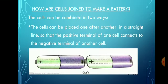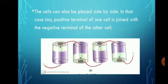There are two ways to join cells to make a battery. First, cells can be placed one after another in a straight line so that the positive terminal of one cell connects to the negative terminal of the next — you can see this in a TV remote where cells are placed in a straight line. Second, cells can be placed side by side; in this case also, the positive terminal of one cell is connected to the negative terminal of another cell using a connecting wire.